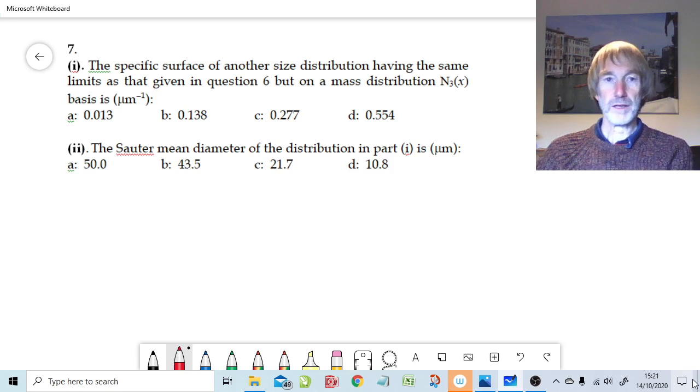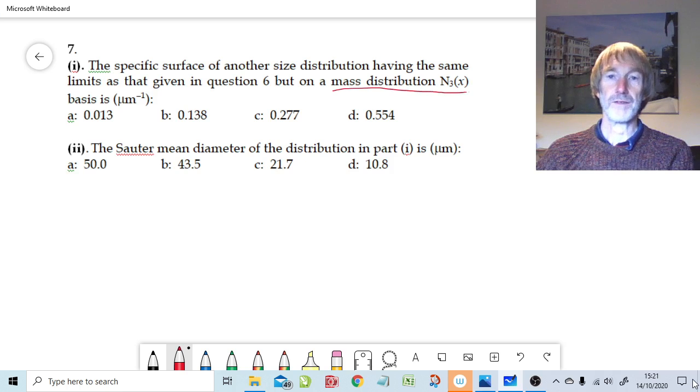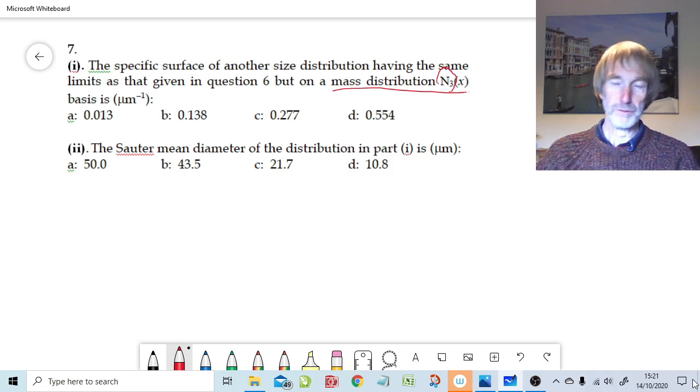By continuous function I simply mean an equation. We have the same thing again in question 7, only the continuous function is based on a mass distribution. That's N3x, uppercase N3x, so it's a cumulative distribution. The uppercase represents cumulative, the 3 represents a mass or volume. They are the same, the mass and volume distribution are the same.